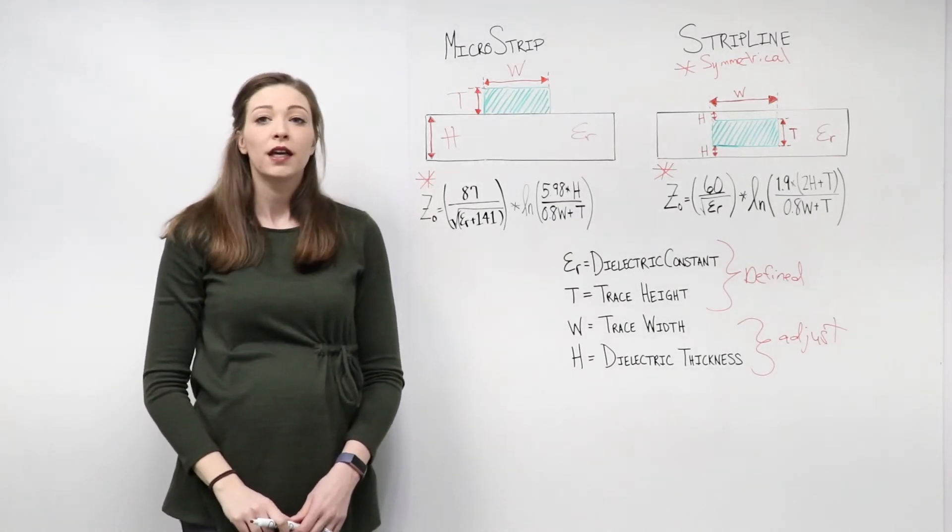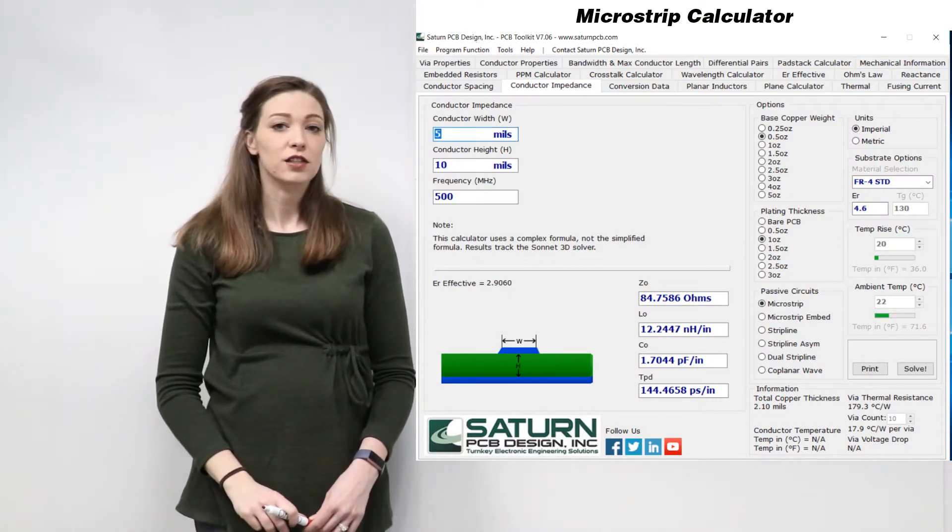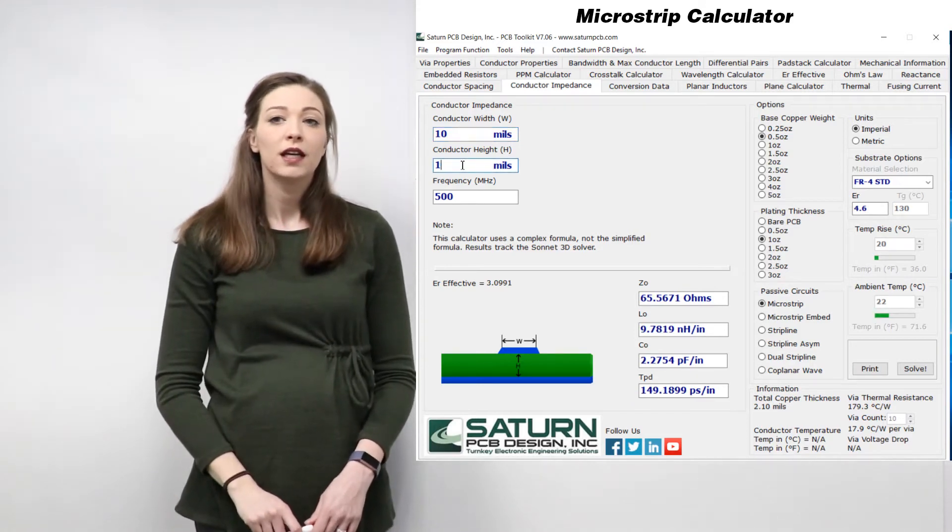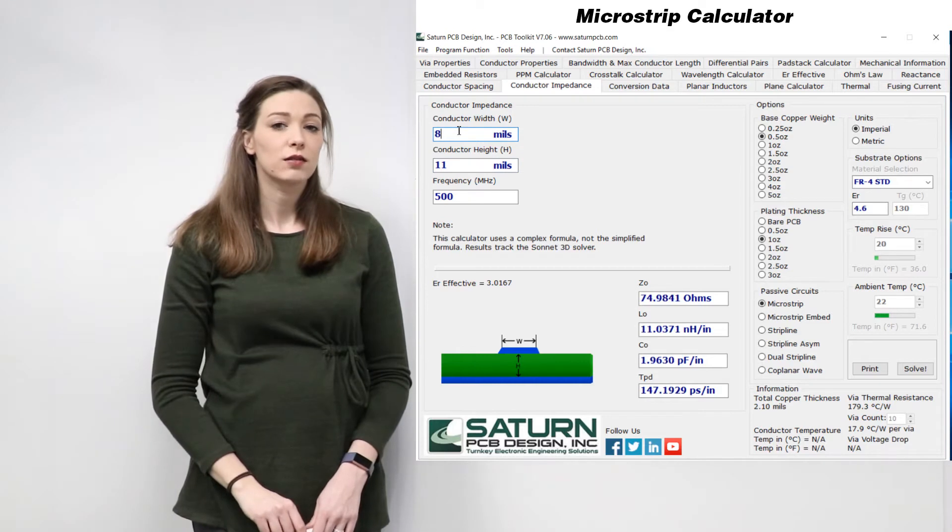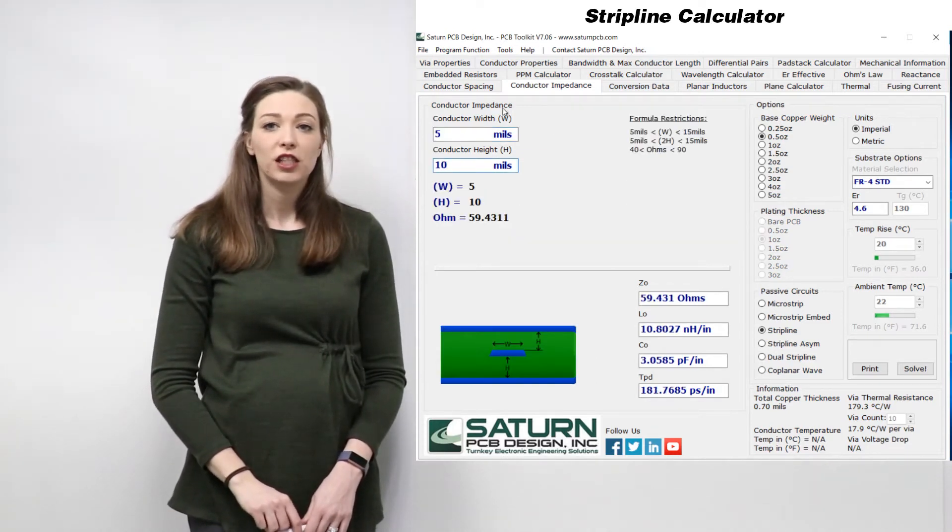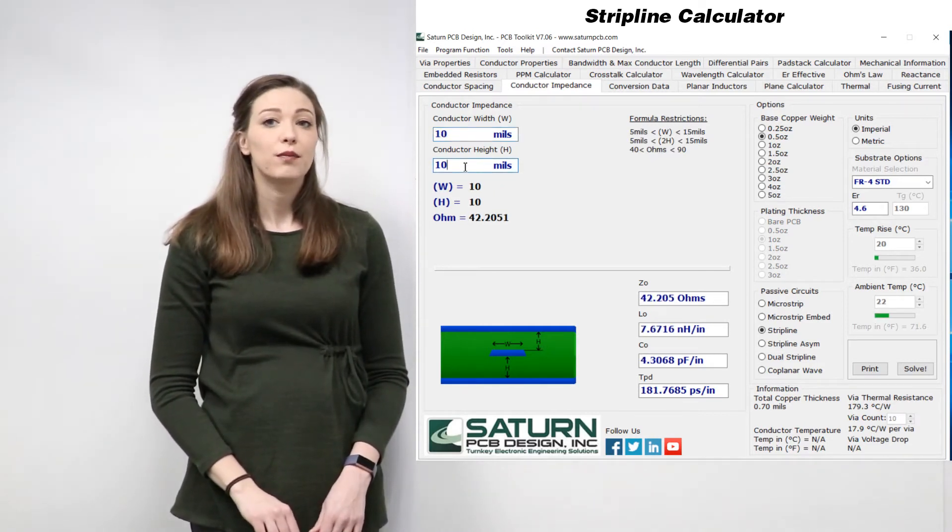Here are some examples of microstrip and stripline impedance calculators which can be found at SaturnPCB.com. These calculators allow you to set options like dielectric constant, copper weight, and plating thickness, while varying the trace width, dielectric thickness, and frequency to obtain the ideal impedance.